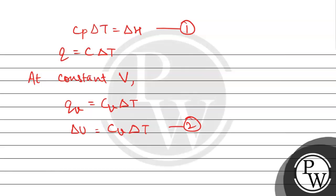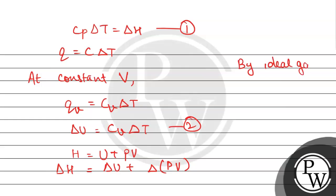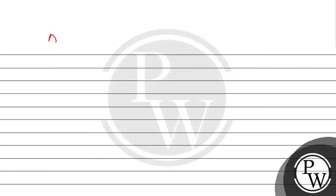Now we have the formula from the first law of thermodynamics. Looking at the change: ΔH = ΔU + Δ(pV). By the ideal gas equation, pV = nRT, so we can replace pV with nRT. Therefore, ΔH = ΔU + nRΔT.